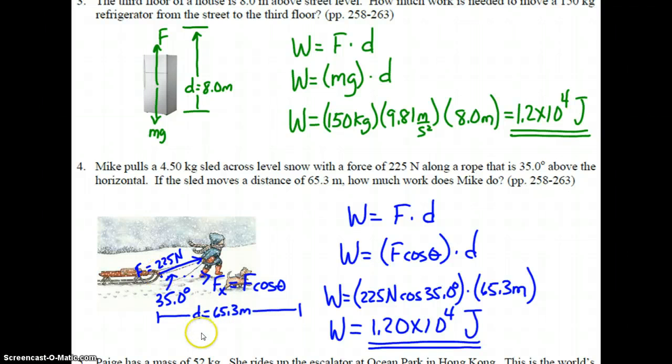So what we have to do is we have to find the component of F that is horizontal and parallel to D. That component, of course, would be the Fx component, which would be calculated by F cosine of 35 degrees, since the Fx component is adjacent to the 35 degree angle. We start with W equals FD. Remembering that F and D have to be parallel to each other. We substitute the X component of F, F cosine theta, in place of F times D. 225 newtons times the cosine of 35.0 degrees is our substitution, times 65.3 meters for our displacement. And when we multiply, we get 1.20 times 10 to the fourth joules to three digits because of our measurements in the problem.